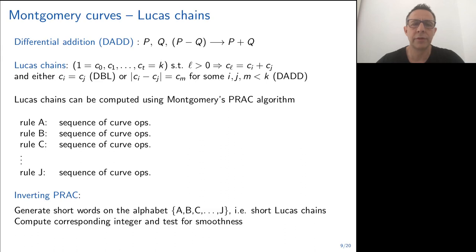On the Montgomery curve, we do not have a classical addition. We only have a differential addition, meaning that if you want to compute P plus Q, you need P, Q, but you also need the difference between P and Q. And if you want to use this differential addition to compute your scalar multiplication, you need to use what is called a Lucas chain. A term in the sequence is defined as the sum of two previous terms, but you also need to ensure that the difference of these two terms belongs to the chain. One way to produce Lucas chains was proposed by Peter Montgomery in the PRAC algorithm.